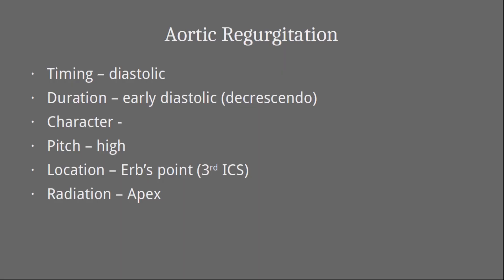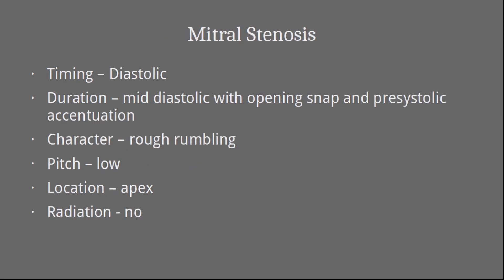The aortic regurgitation murmur occurs because blood is flowing into the ventricles, so it is a diastolic murmur. It occurs during the early phase of diastole and is heard most intensely at the early phase, decreasing toward the end, making it an early diastolic murmur of decrescendo nature. It is high-pitched and best heard at Erb's point, at the third intercostal space to the left of the sternum. It can also be heard at the cardiac apex, and to differentiate it from mitral regurgitation, placing the stethoscope at the axilla is useful, as aortic regurgitation does not radiate to the axilla whereas mitral regurgitation does.